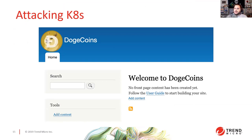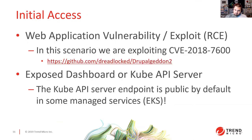The example site I created for threat modeling is a vulnerable Drupal web application from three years ago, version 8.5. Since it's an outdated system, it has a remote command execution vulnerability — the CVE exploit is available on the internet and can be easily used to gain initial access to a Kubernetes environment.